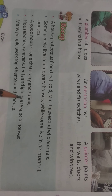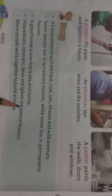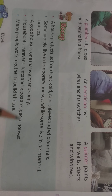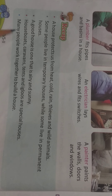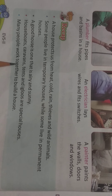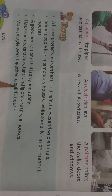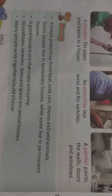Houseboats, caravans, tents, and igloos are special houses. In yesterday's live class we discussed the special houses - houseboats, caravans, tents, and igloos. And the last point is: many people work together to build a house. To build one house, many people work together.